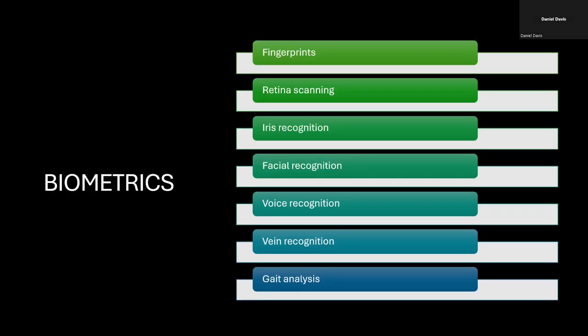Another thing we can use for authentication is biometrics, which falls into the 'something you are' category. This includes fingerprints, retina scanning, iris recognition, facial recognition, voice recognition, vein recognition, and gait analysis.